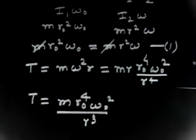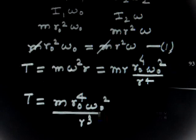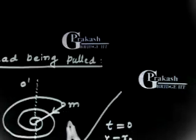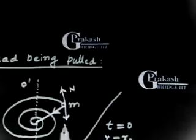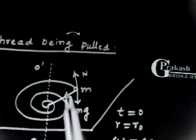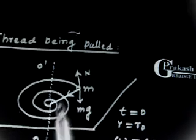The important point in this problem is the axis passing through the hole. Angular momentum is conserved about this axis because all forces acting on the system pass through this axis. The normal reaction and Mg cancel each other (their torques cancel), and the tension and pulling force both pass through the axis, so their torques are zero.